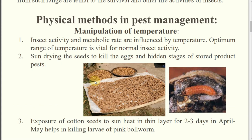In physical methods of pest management, first we will discuss manipulation of temperature, then humidity, then air, and so on. As all of you know from the IPM course and ecology, we have studied the effect of abiotic factors like temperature on insects. Sometimes we need to reduce temperature below 10 degrees centigrade, or sometimes increase it above 35 degrees centigrade. First we will discuss increasing temperature, then decreasing it.